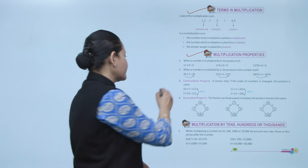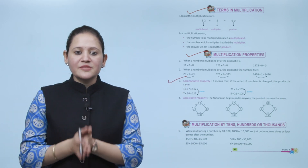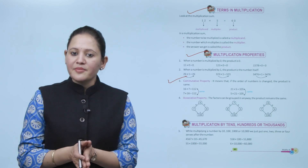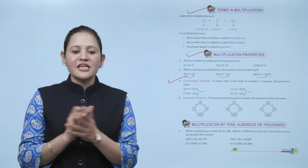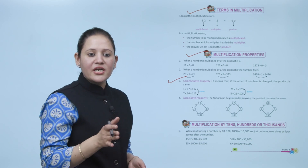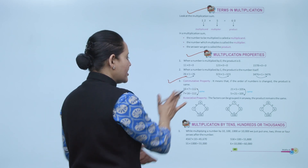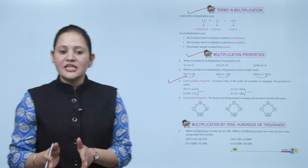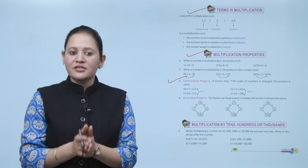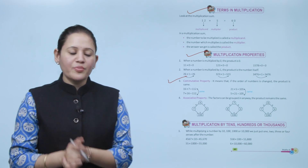Next is the commutative property. According to this property, if the order of the numbers is changed, the product remains the same. For example, 16 into 7 equals 112, and 7 into 16 also equals 112. That means we can multiply two or more numbers in any order and the product will remain the same.